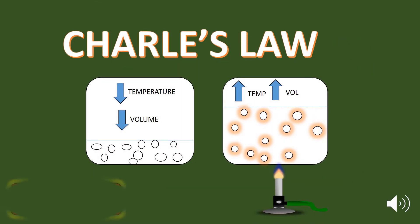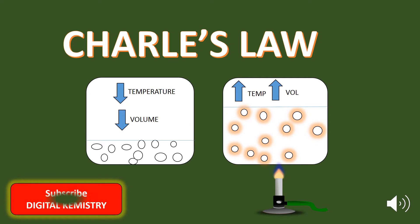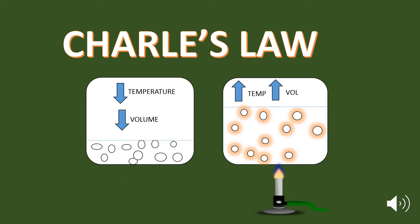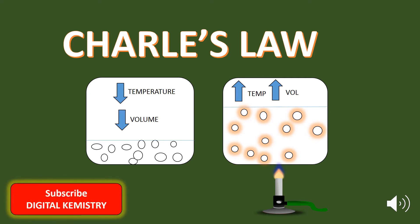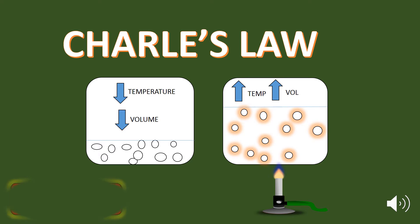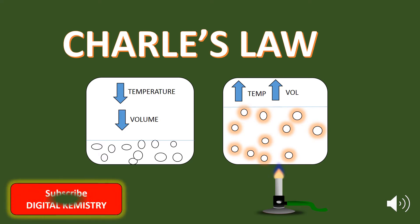Hello and welcome to Charles' law. In 1787, Charles related the volume and the absolute temperature of ideal gases at constant pressure and mass, in the form of Charles' law.